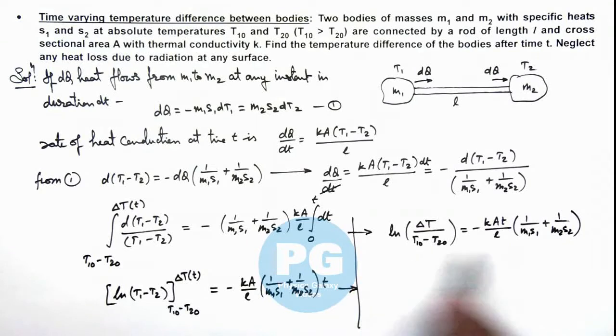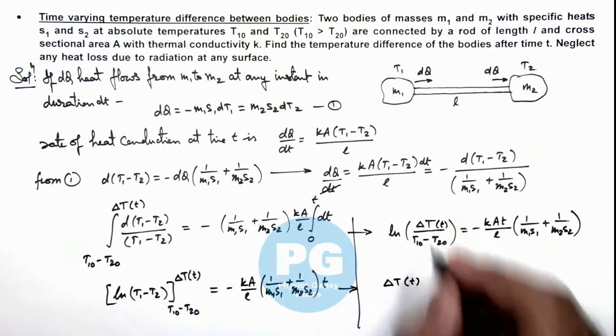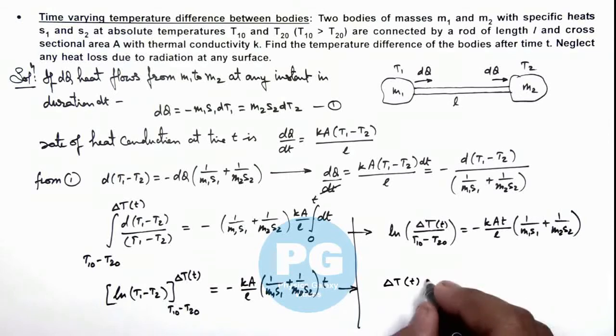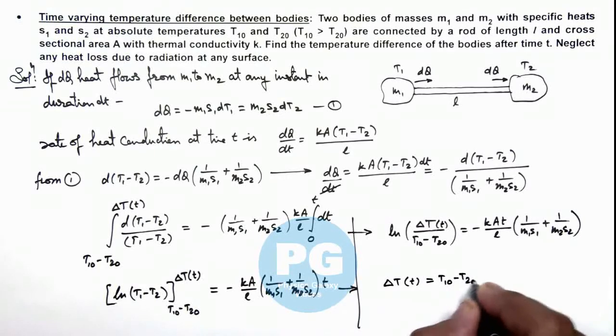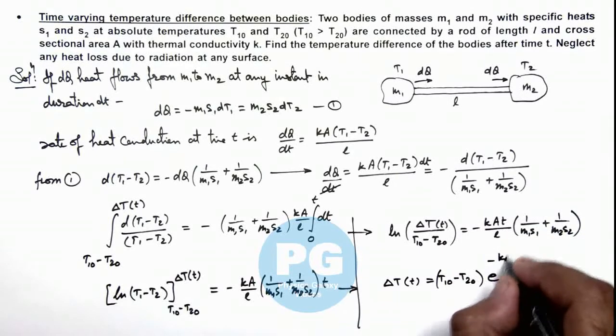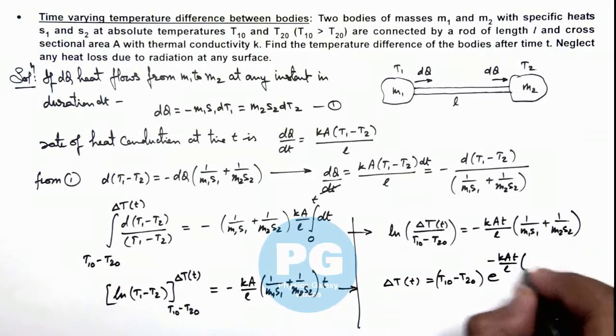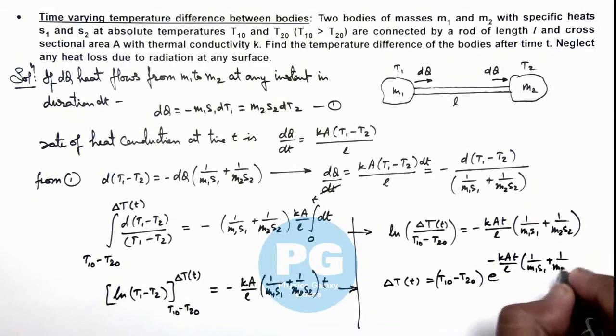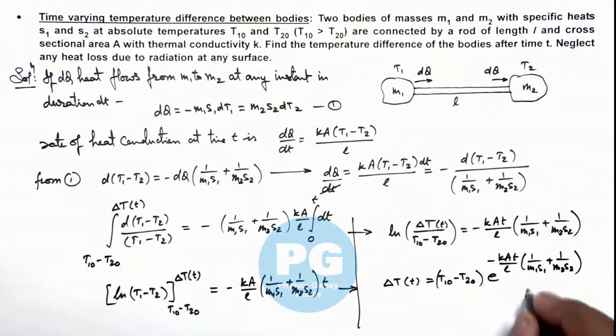So taking natural log on the right hand side, left hand side this becomes directly we are getting ΔT as a function of time, which can be written as (T₁₀ - T₂₀) multiplied by e to the power -kA/l(1/m₁s₁ + 1/m₂s₂)t. So this is the final result of this problem, the temperature difference of the body as a function of time.